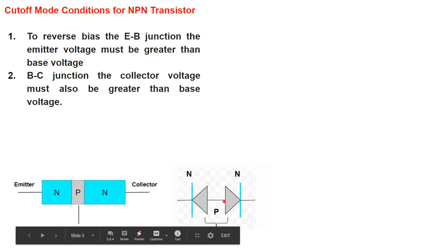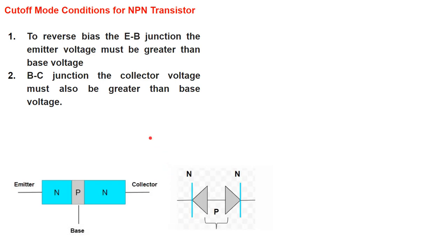The same condition applies for the base-to-collector diode. If we want to reverse bias this diode, definitely the collector side should be at higher potential and base should be at lower potential. Then these two junctions are reverse biased and there will be no current flow between the emitter, base, and collector — no current will come from emitter to base and go towards the collector.